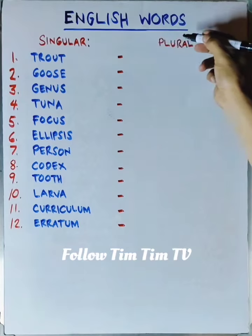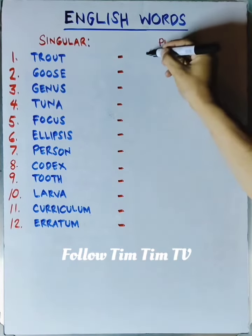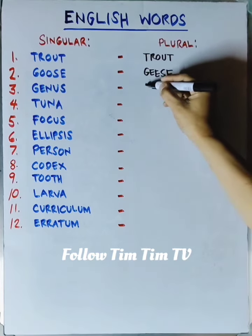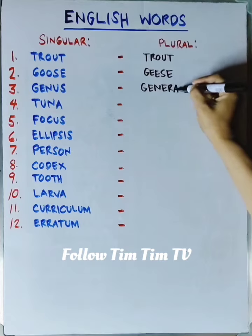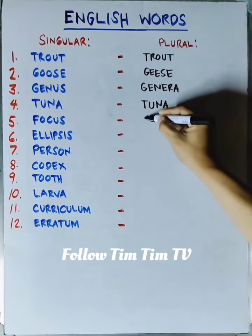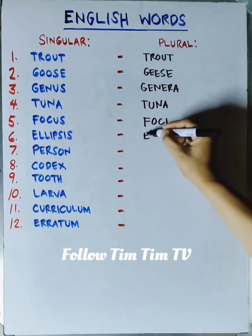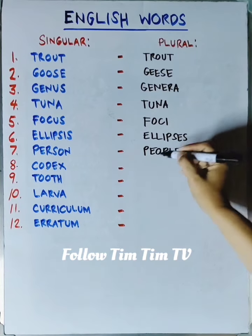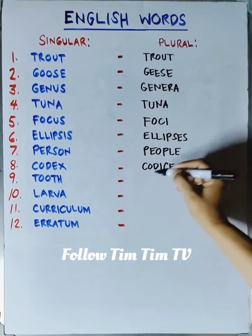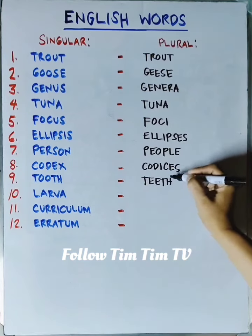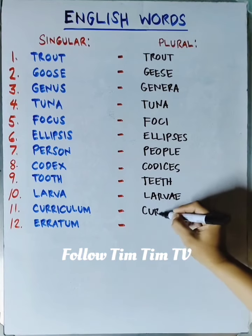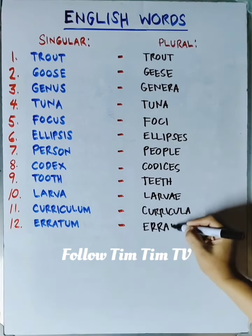English words, singular to plural. Trout is trout. Goose is geese. Genus is genera. Tuna is tuna. Focus is foci. Ellipsis is ellipses. Person is people. Codex is codices. Tooth is teeth. Larva is larva. Curriculum is curricula. Erratum is errata. Share this video and follow TimTimTV for more.